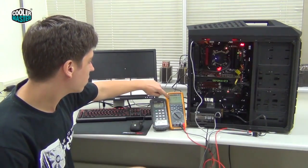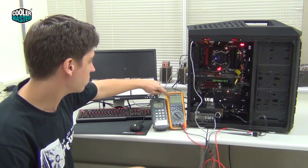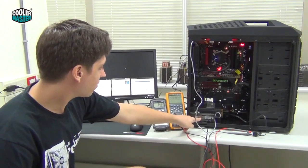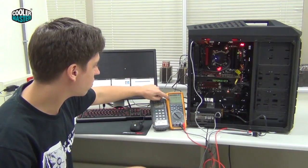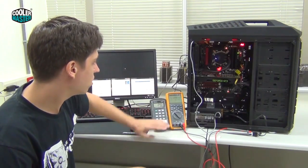Then at the same time we measure the voltage, the 12V voltage, because this is what the motherboard uses to feed the CPU. And calculating the current together with the voltage gives us the wattage power consumption of the CPU.